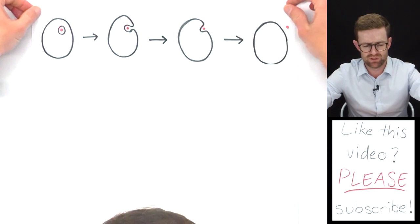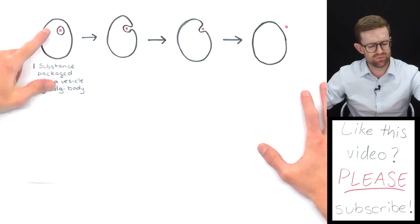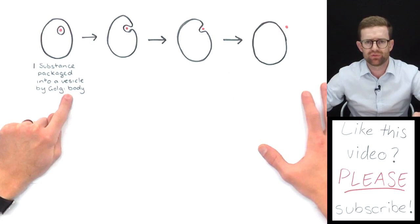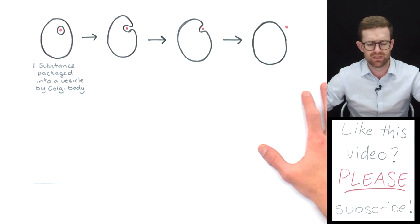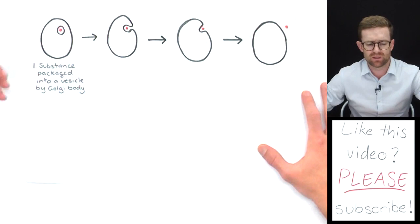First of all, we would start with some sort of substance that's packaged into a vesicle and it would be packaged into a vesicle by the Golgi body. If you remember learning about that organelle, we think of it as like the post office of the cell. It packages up substances that are going to be secreted out of the cell. Here is one of those things—a vesicle. This pink dot in the middle here is some sort of substance, a molecule, a particle, something that's going to be removed from the cell.